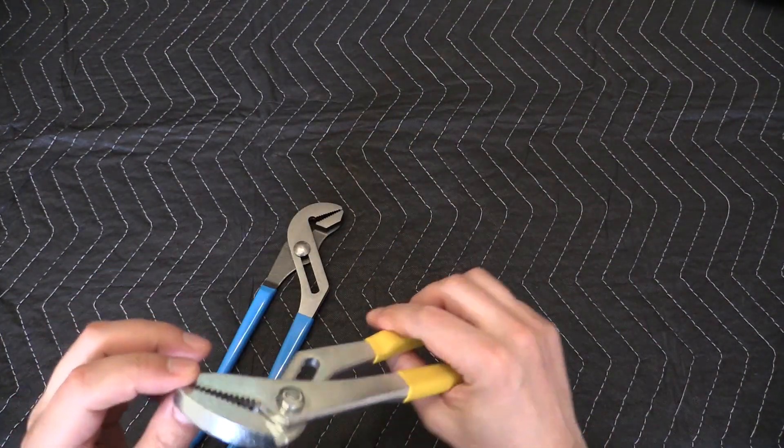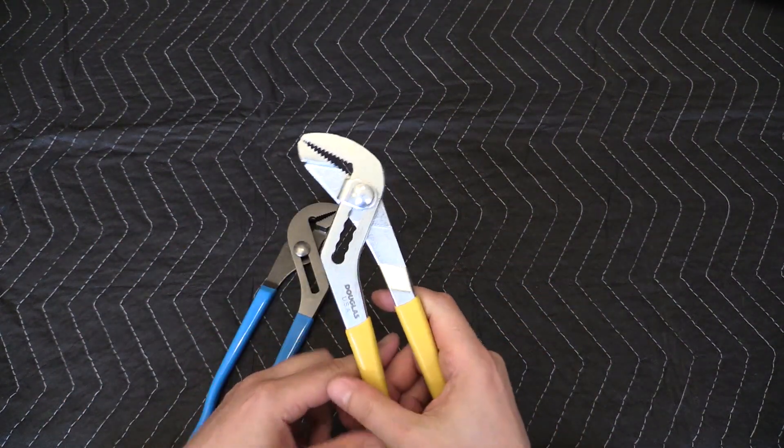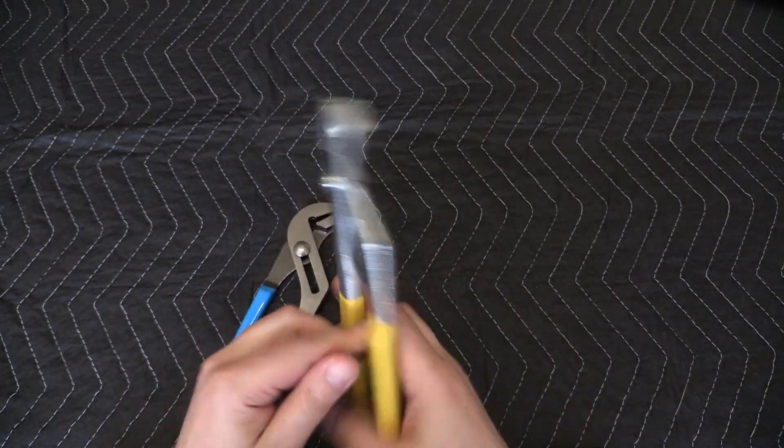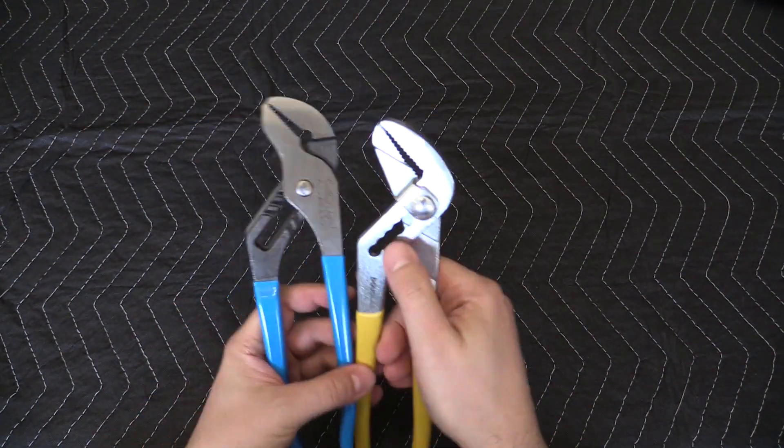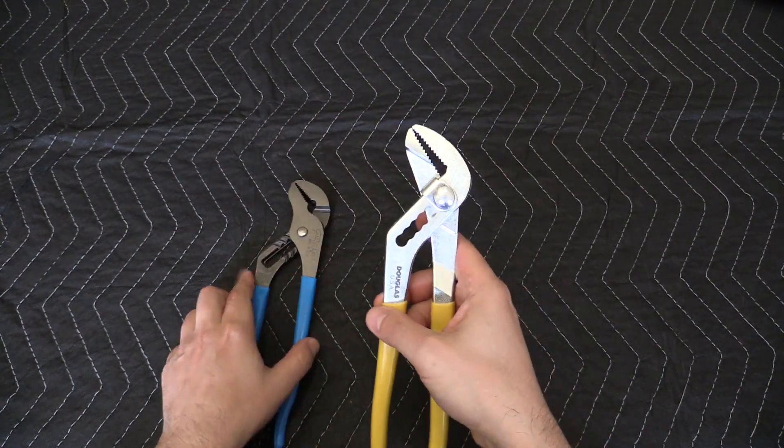Right off the bat we can see they have some kind of plating that should help prevent these pliers from getting rusty and they also have a different kind of mechanism compared to your traditional channel lock tongue and groove pliers.